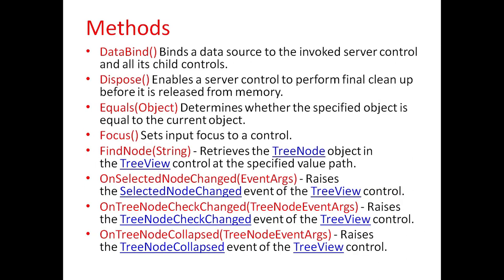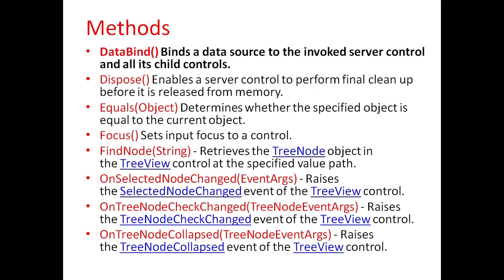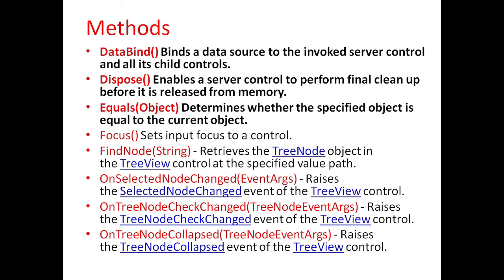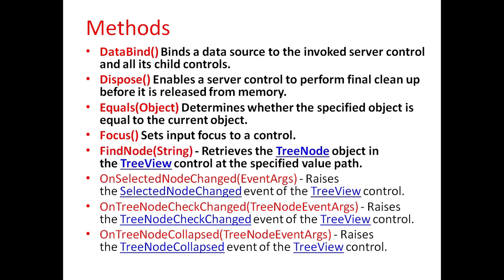Different methods for TreeView controls are: DataBind, which binds a data source to the invoked server control and all its child controls; Dispose, which enables a server control to perform final cleanup before it is released from memory; Equals, which determines whether the specified object is equal to the current object; Focus, which is used to set the input focus to the control; and FindNode, which retrieves the TreeNode object in the TreeView control at the specified value path.